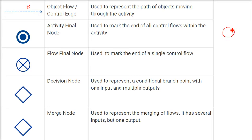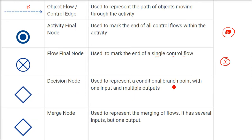We also have the flow final node, which marks the end of a single control flow. Then there are two symbols that look almost similar: the decision node and the merge node. The decision node is a diamond shape used to represent a conditional branch — for example, 'Is it going to rain?' — yes goes one way, no goes another.